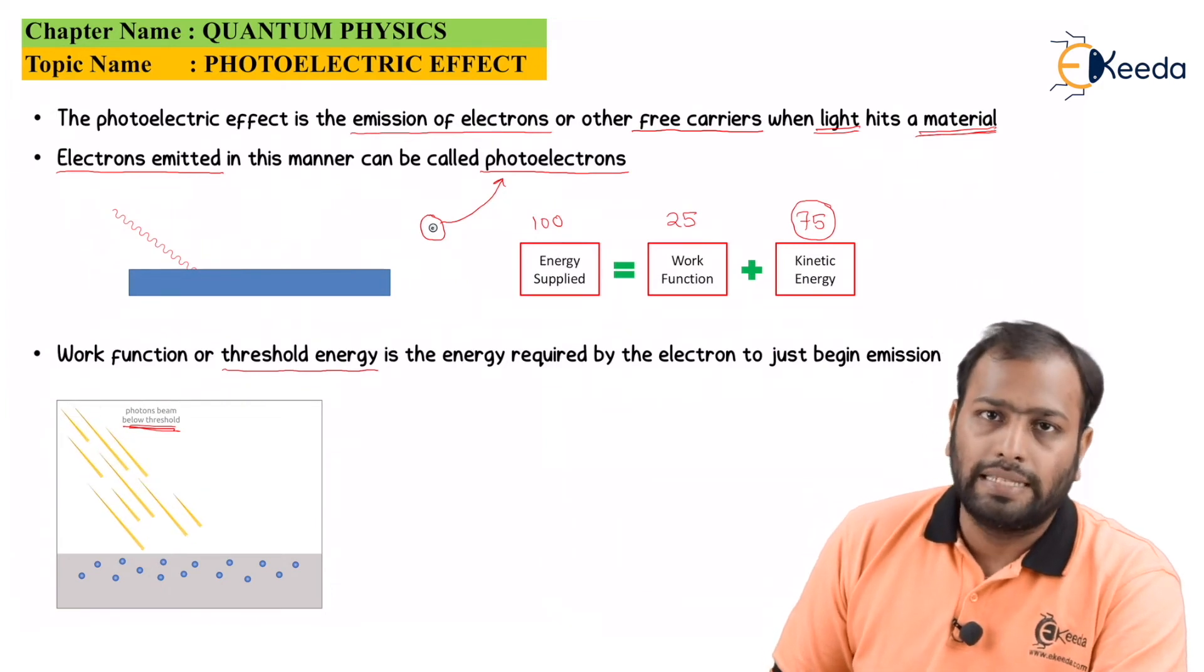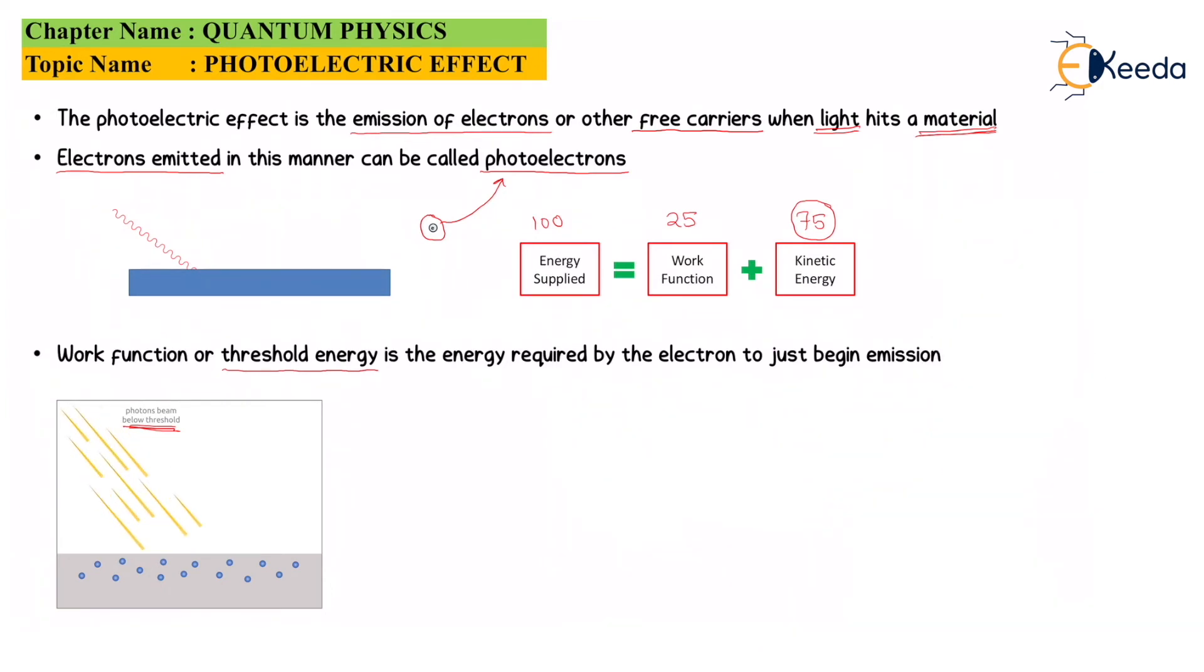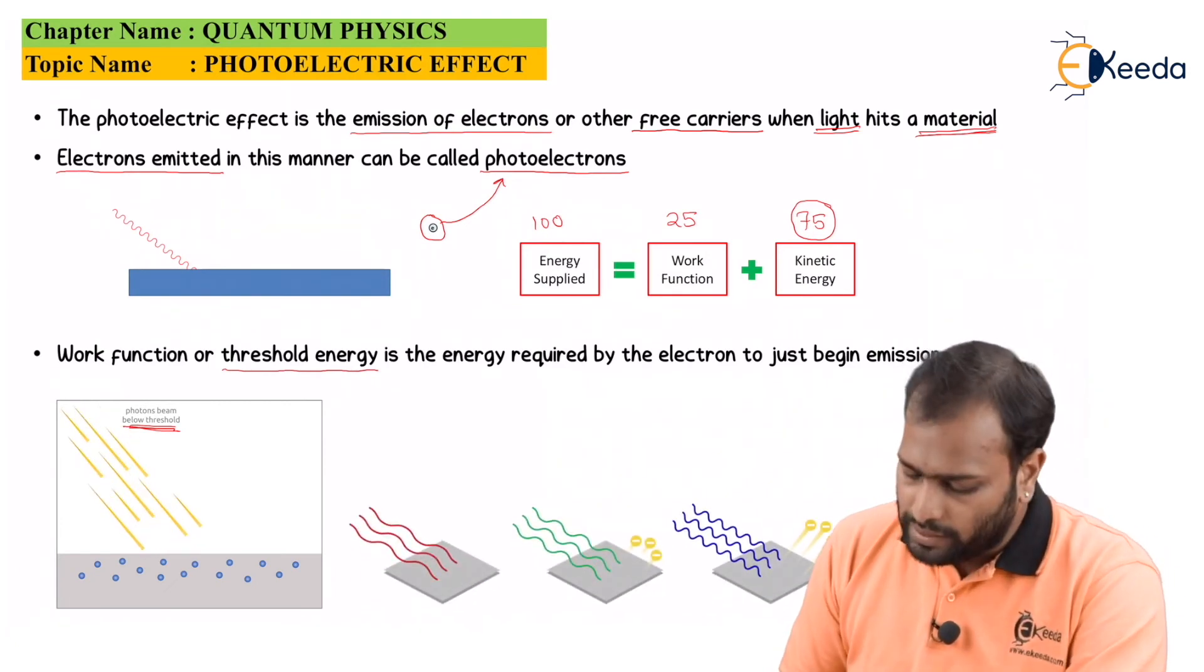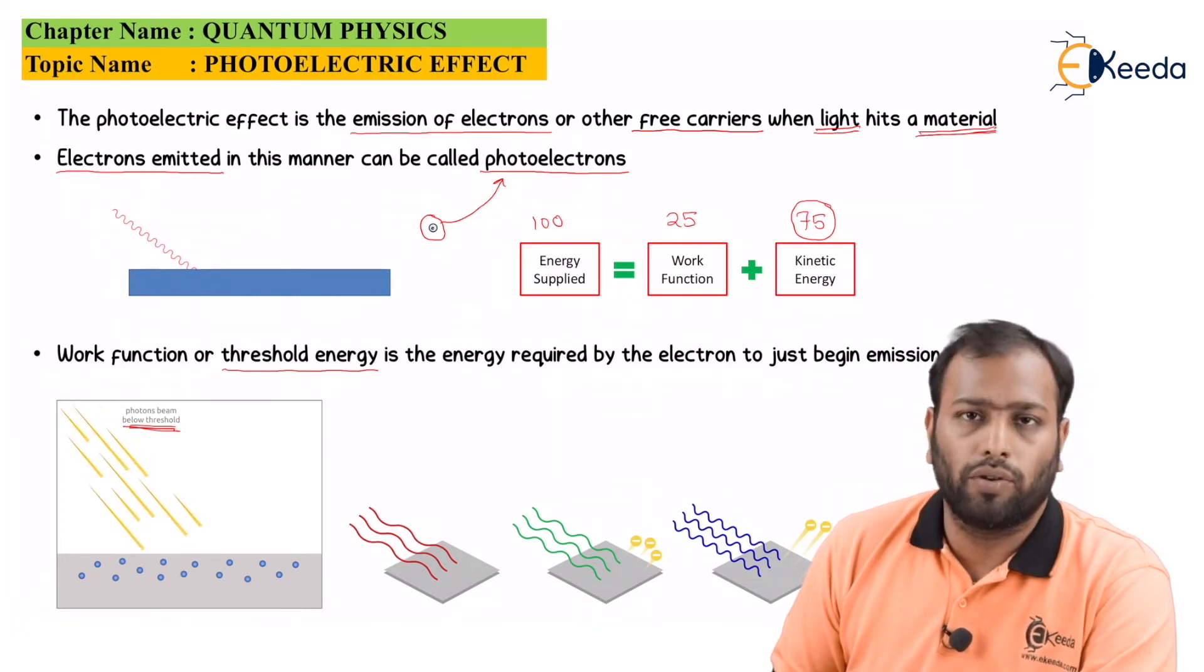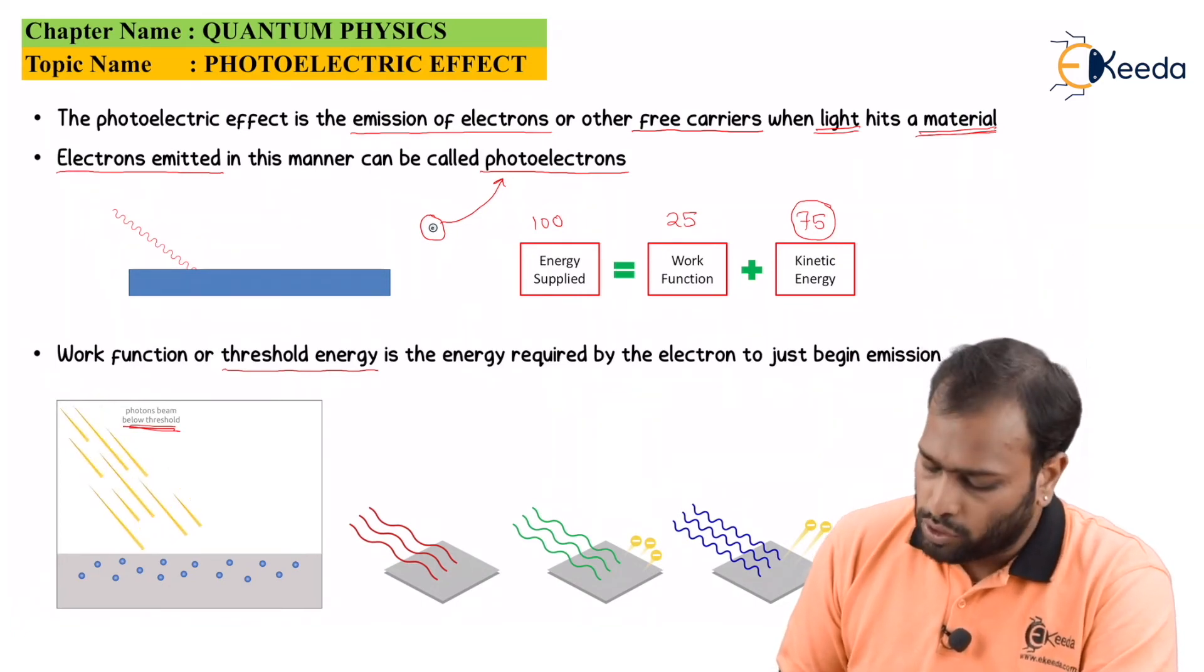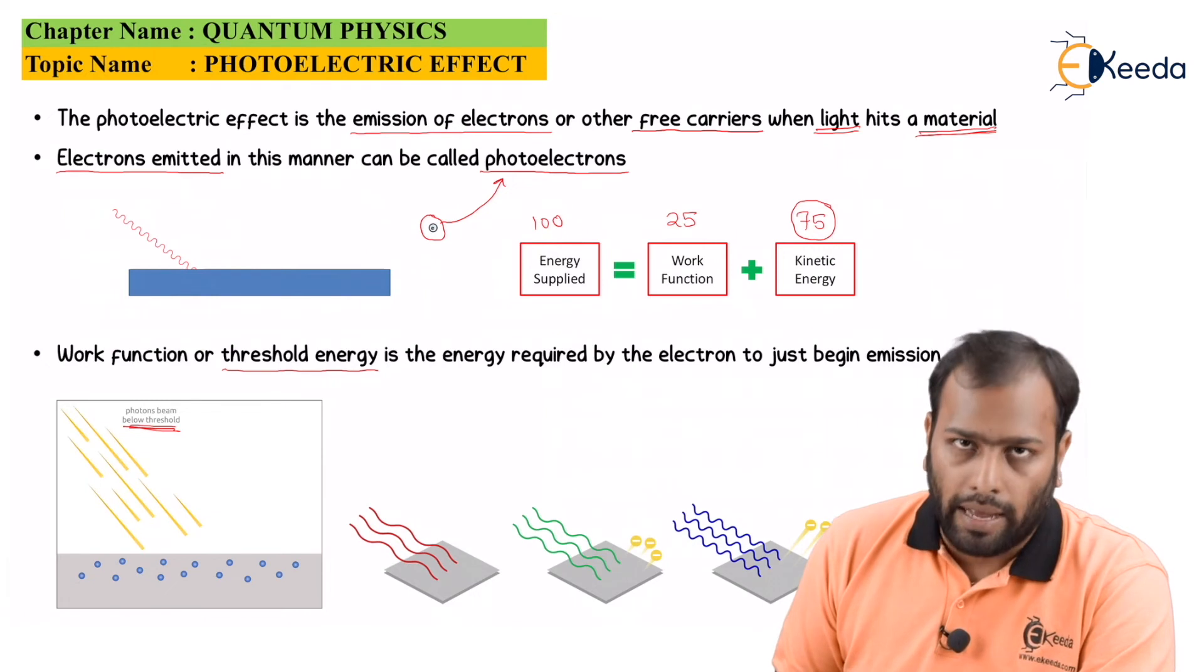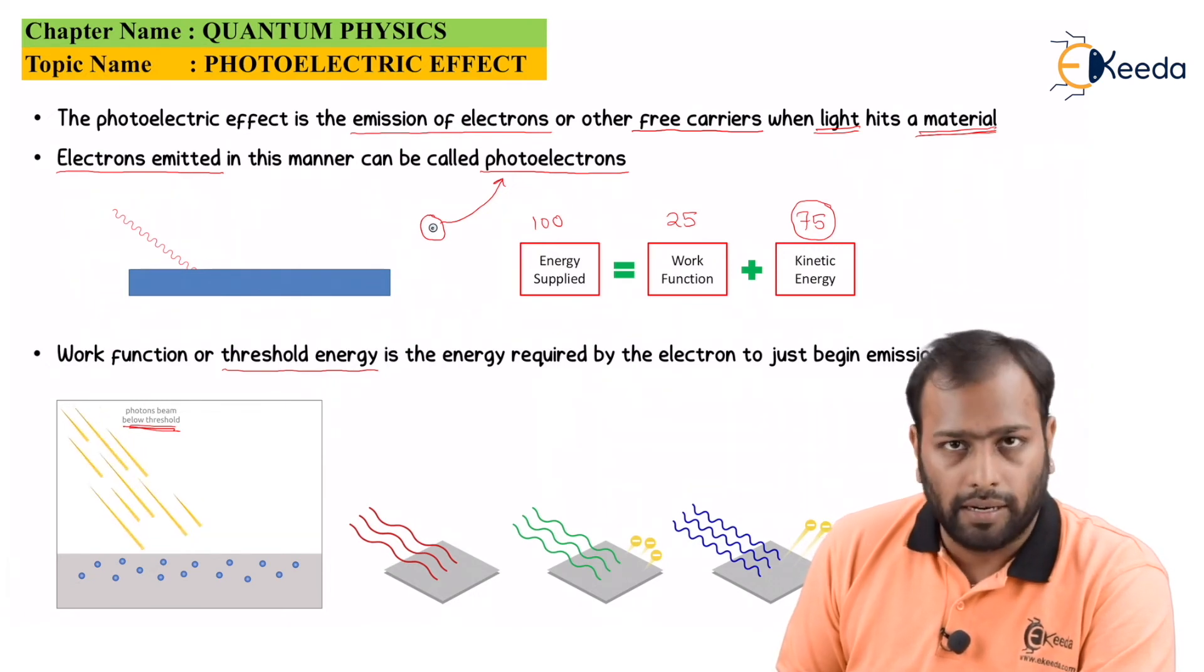Now, let's take an example wherein I will be showing three different types of radiations. As you can see, in the first example, I have passed red color radiations and I can see no electrons getting knocked off the surface. So this indicates my energy by this red colored radiation is far below the threshold level.